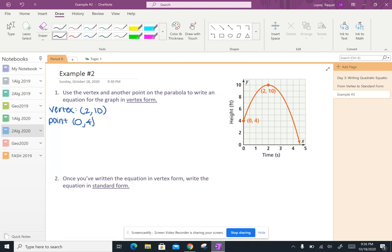So I know that I can plug that into the structure of my vertex form. So remember the structure is y equals a times x minus h squared plus k. So I'm going to plug 2 comma 10 in for h and k into that equation. So I've got y equals a